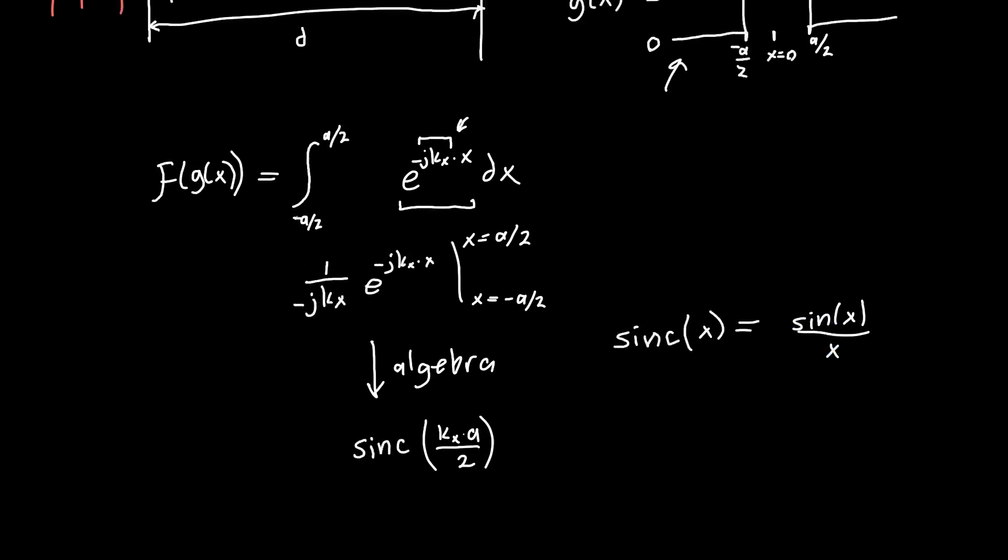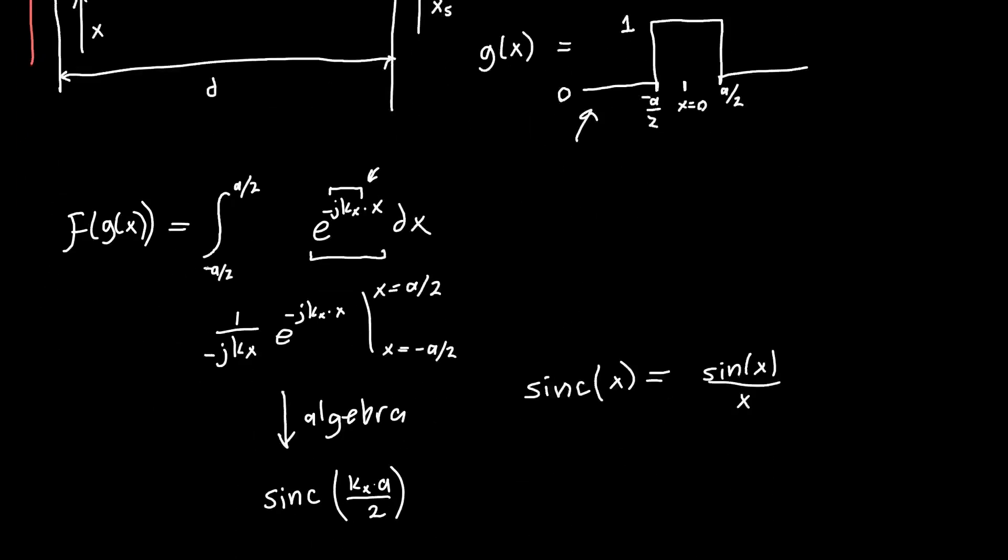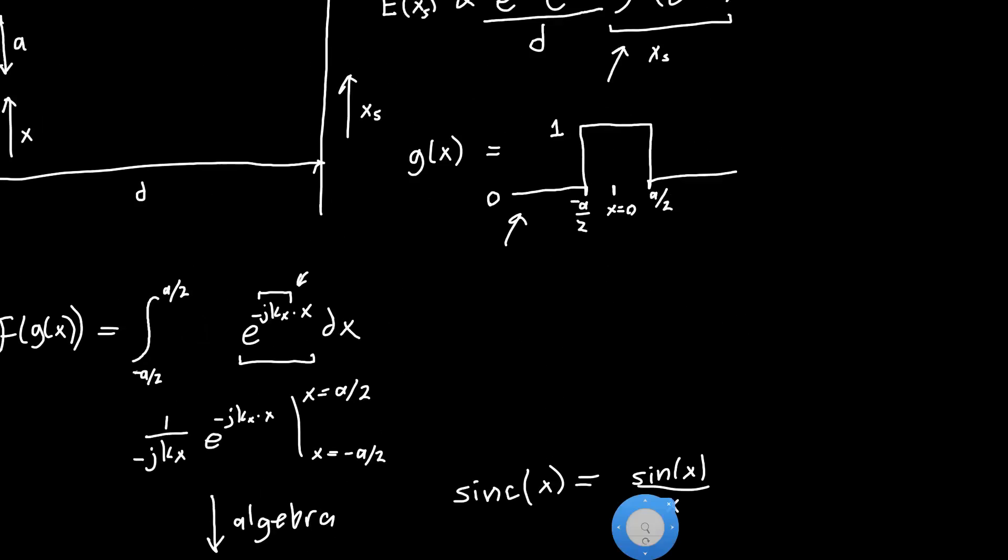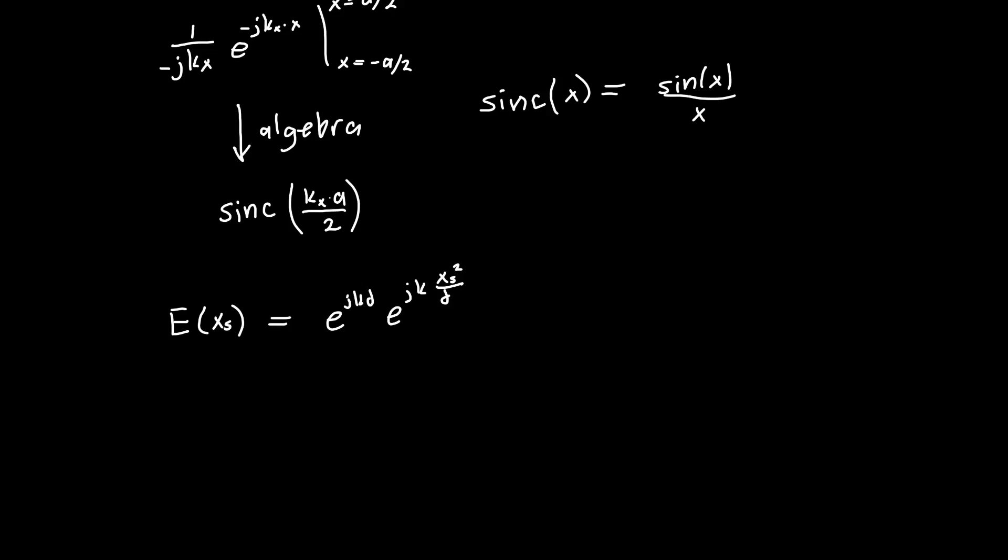We can plug this back into our initial equation for the Fourier transform of g of x. And we can figure out the electric field pattern at the slit. So now let's write out these phase terms. So e to the jkd, e to the jk xs squared over d divided by d.